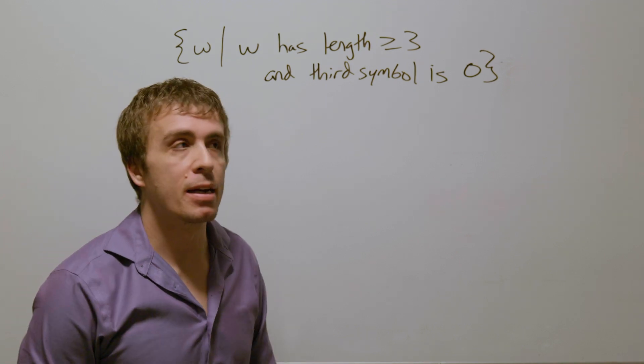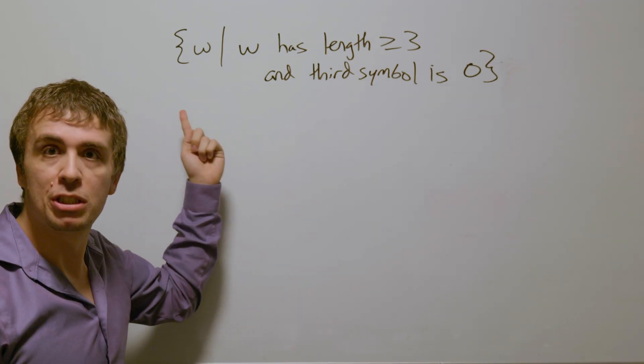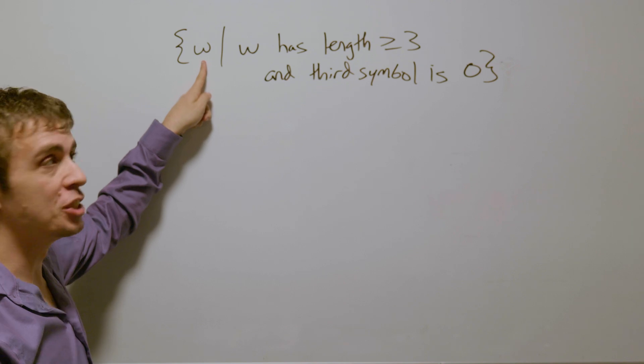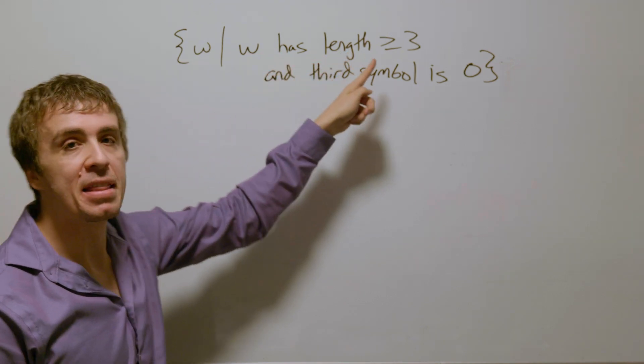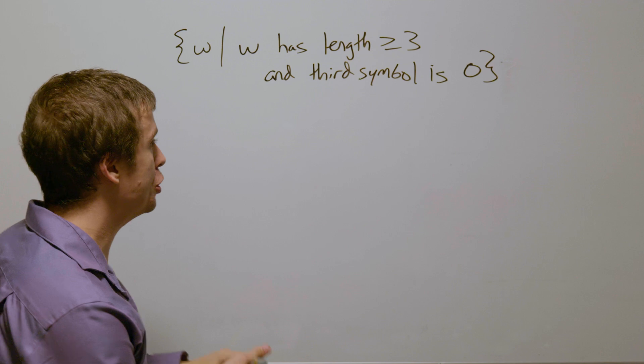Let's make a deterministic finite automaton for this language, which is the set of all binary strings w, where w has length at least three and its third symbol is zero.